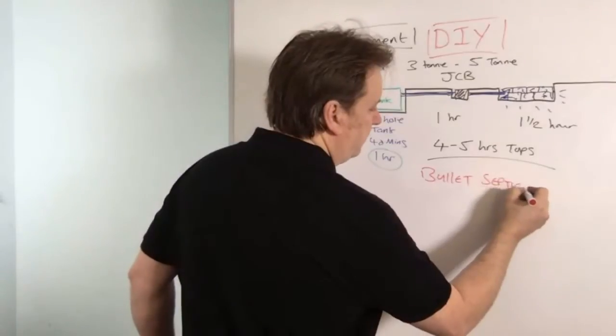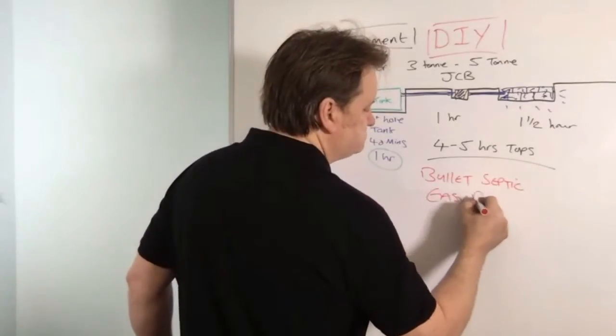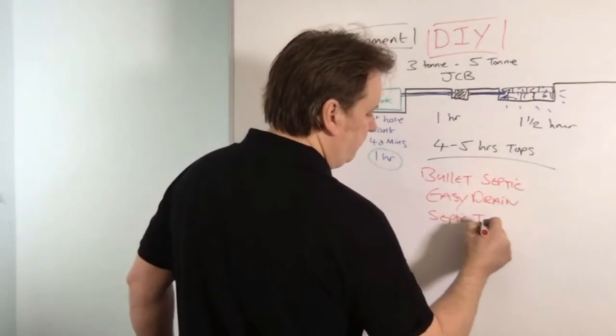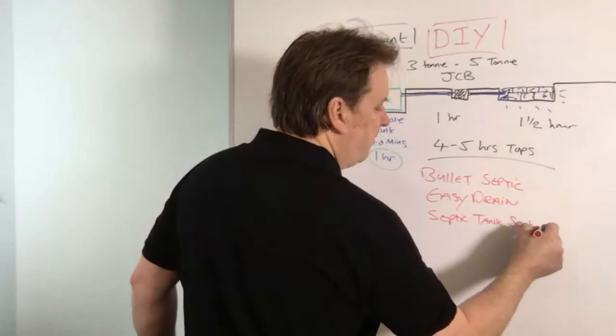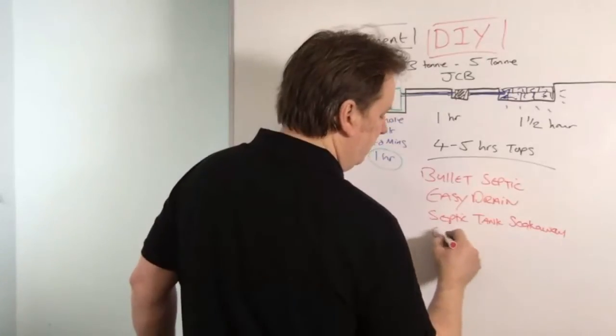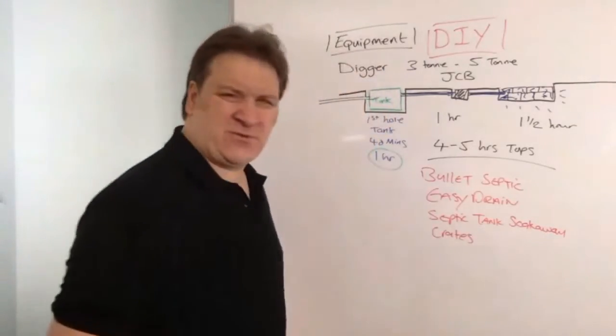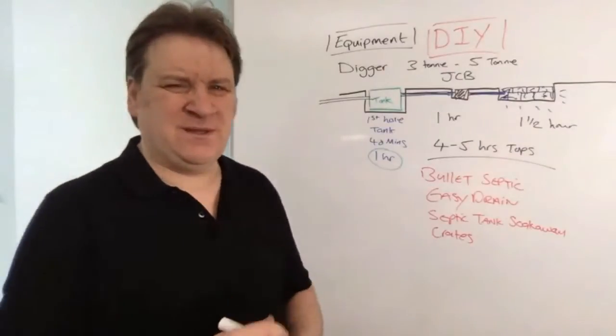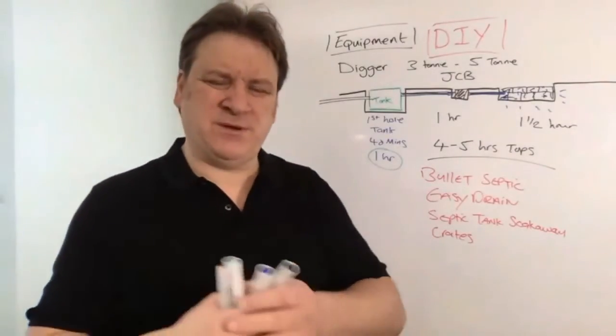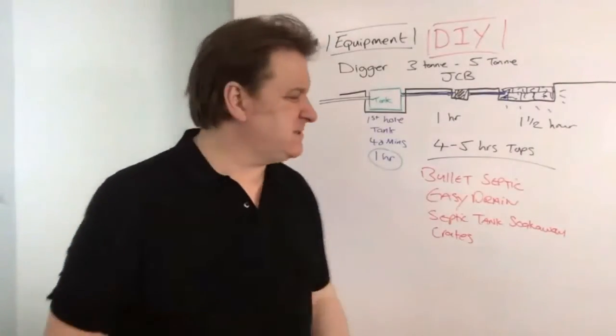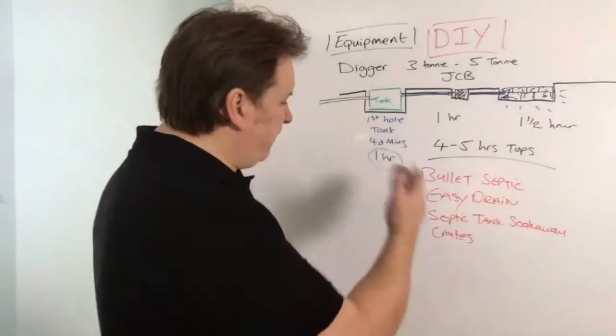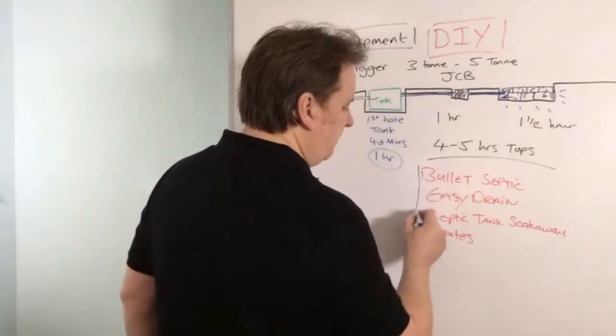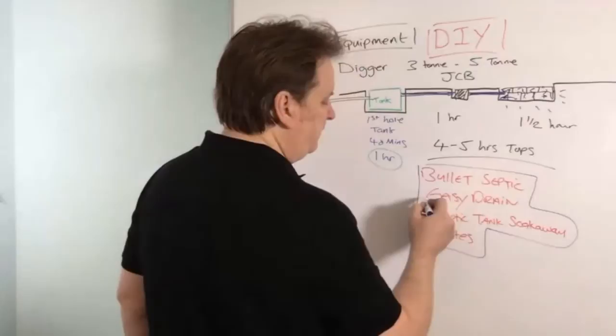I'm really giving you some leeway here, but that basically is the amount of time it's going to take you to put your own tank in, and that's how complicated it is. Dig a little hole for your tank, put your tank in, put your pipes in, put your crates in, job done. If you want to save anywhere from three to seven thousand quid, I seriously recommend that you do it yourself. The two biggest requirements you need are a Bullet septic tank, Easy Drain, or septic tank soak away crates.